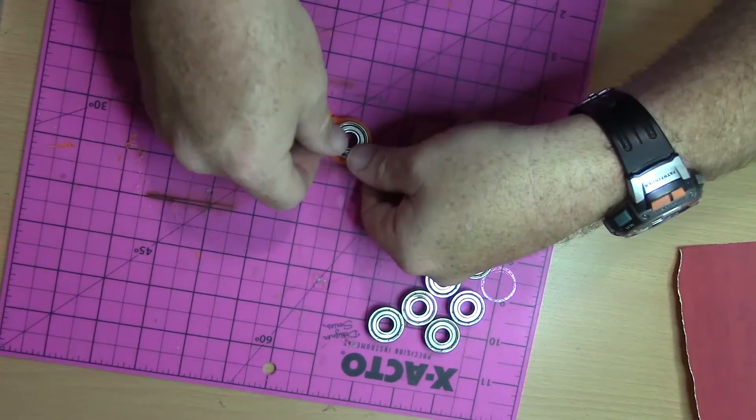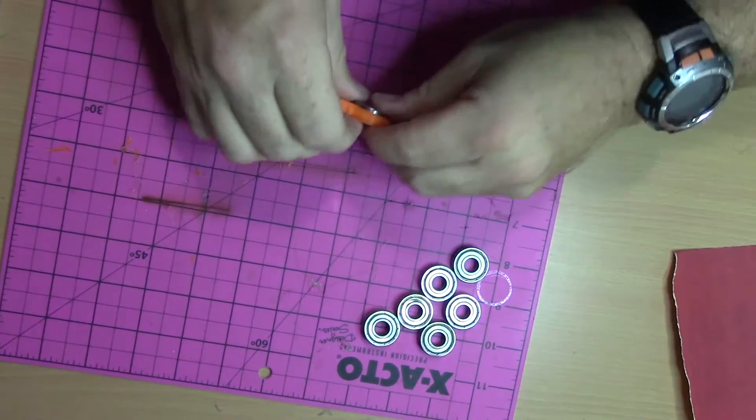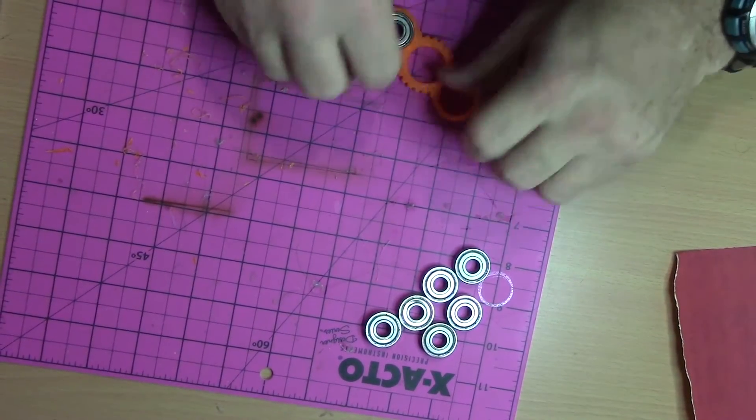I press fitted the bearings in by pushing down on it. You have to be careful not to break the plastic when you do this, but it doesn't take much pressure and they go on pretty well.